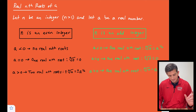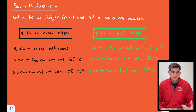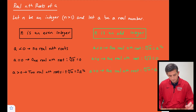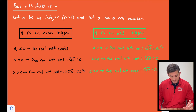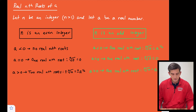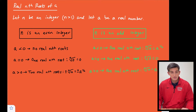Starting with the even integer case: if a is less than zero, there are no real nth roots — for example, the square root of a negative number has no real roots. If a is equal to zero, there is one real nth root, which is zero. And if a is greater than zero, there are two real nth roots — the positive and the negative value.